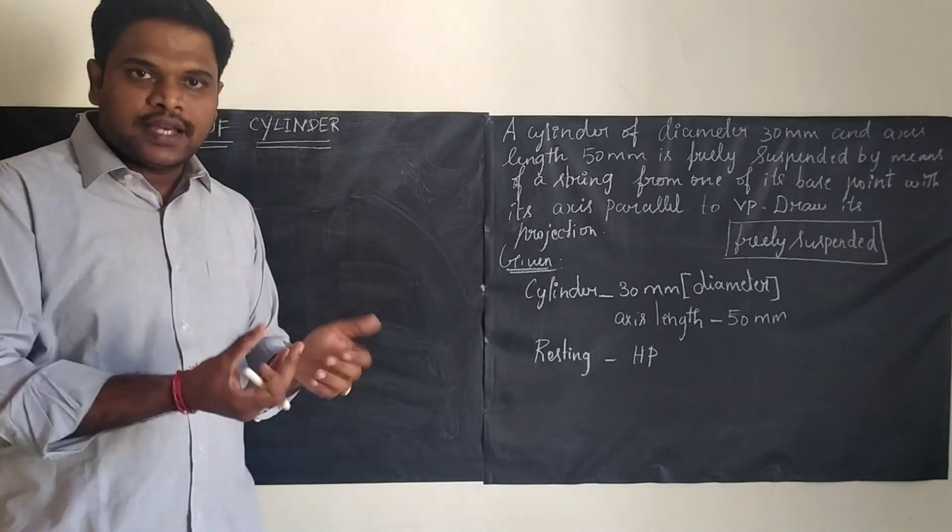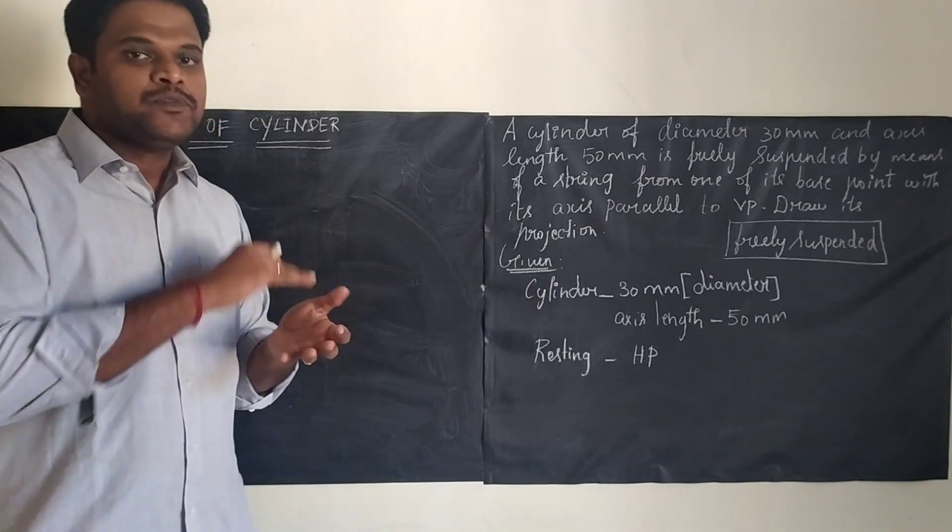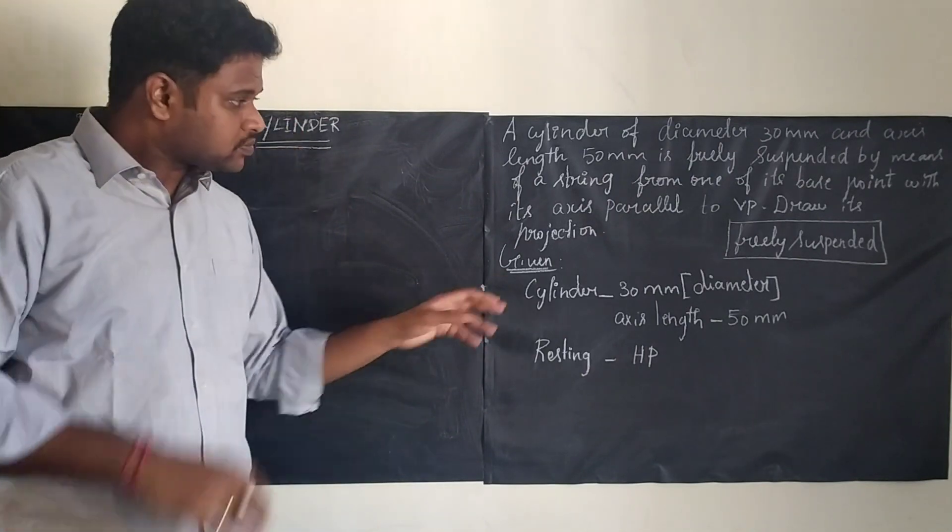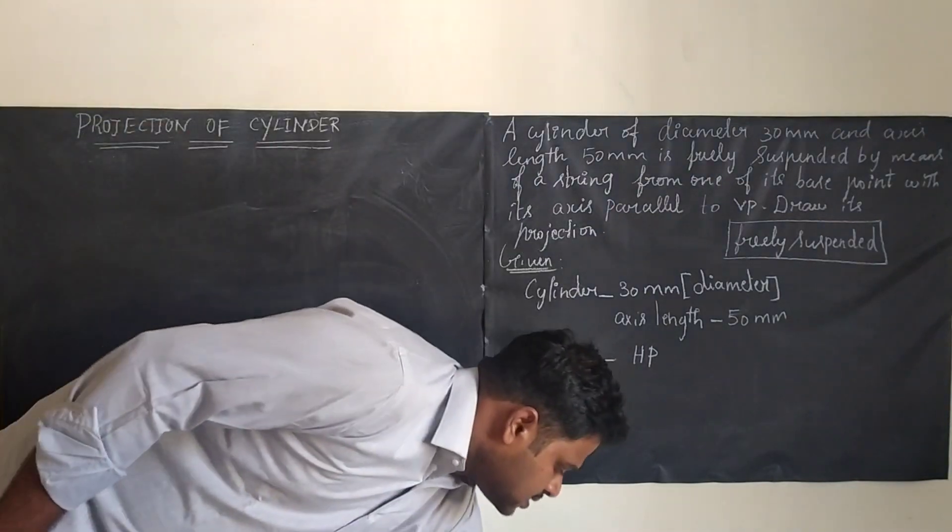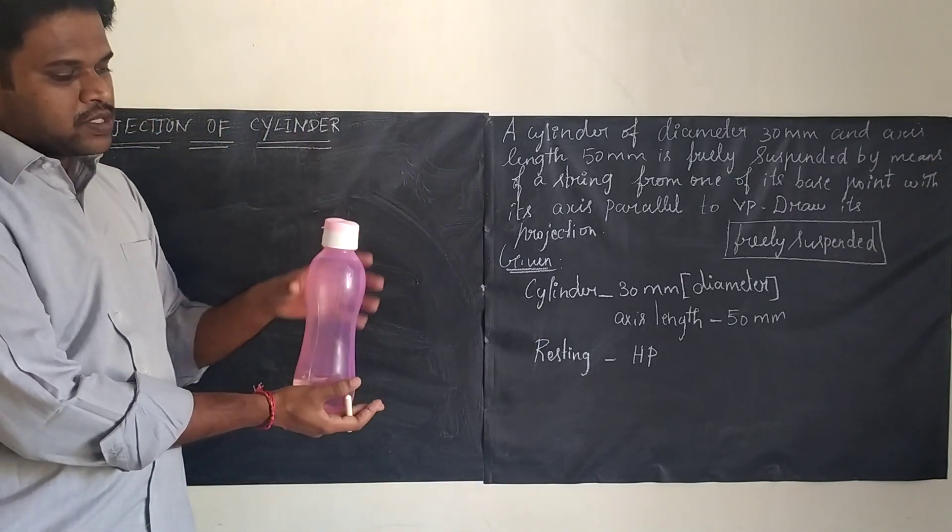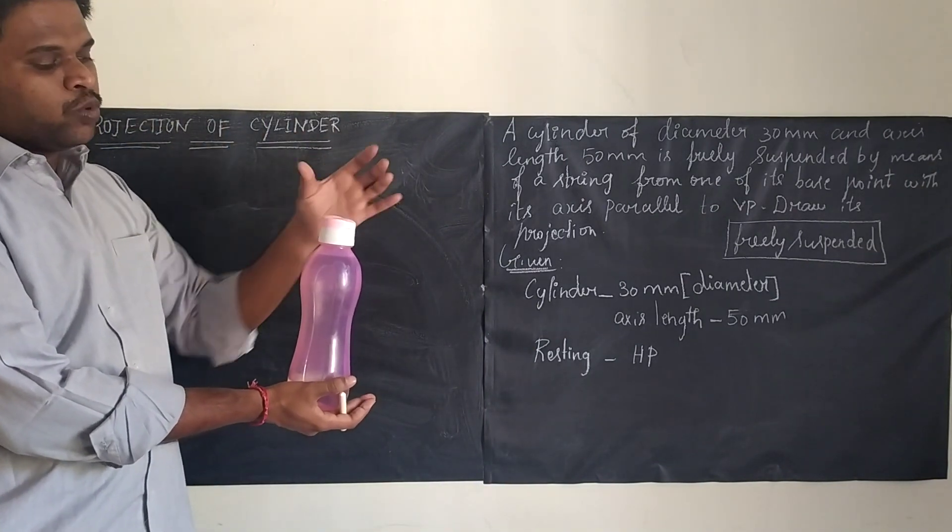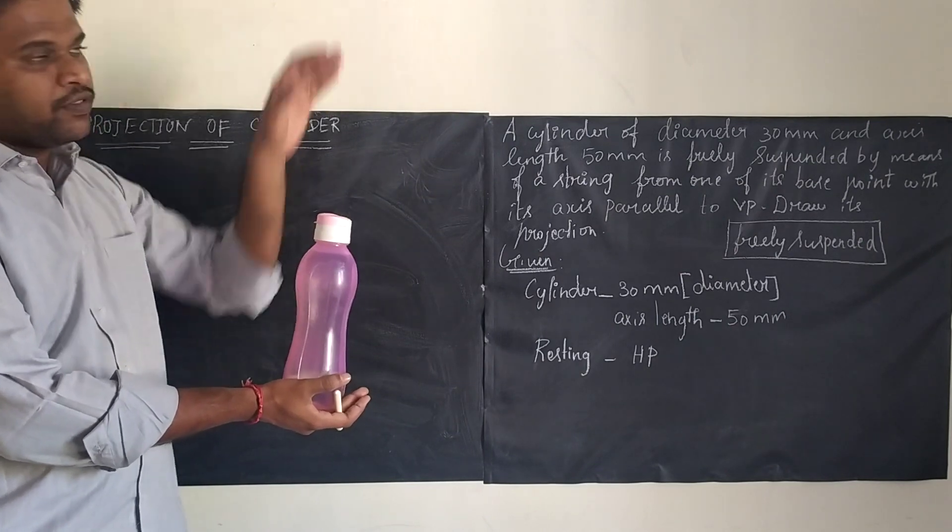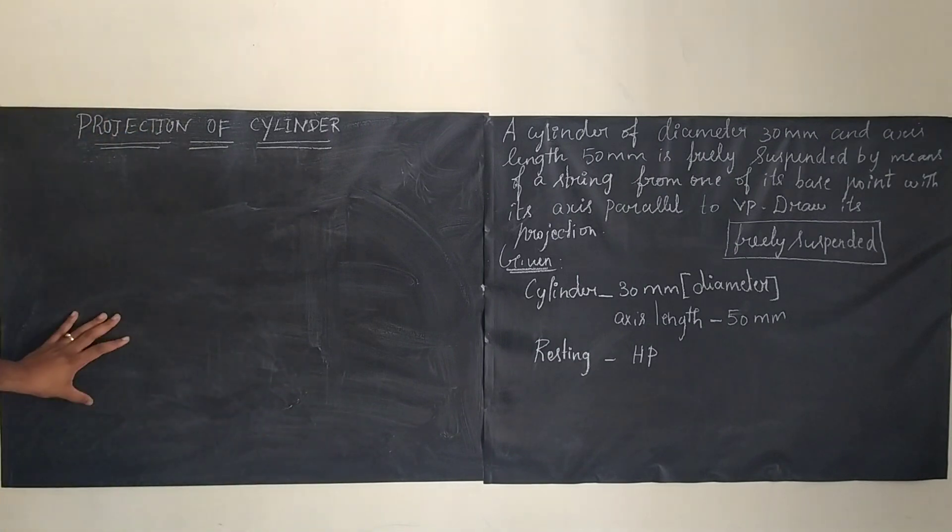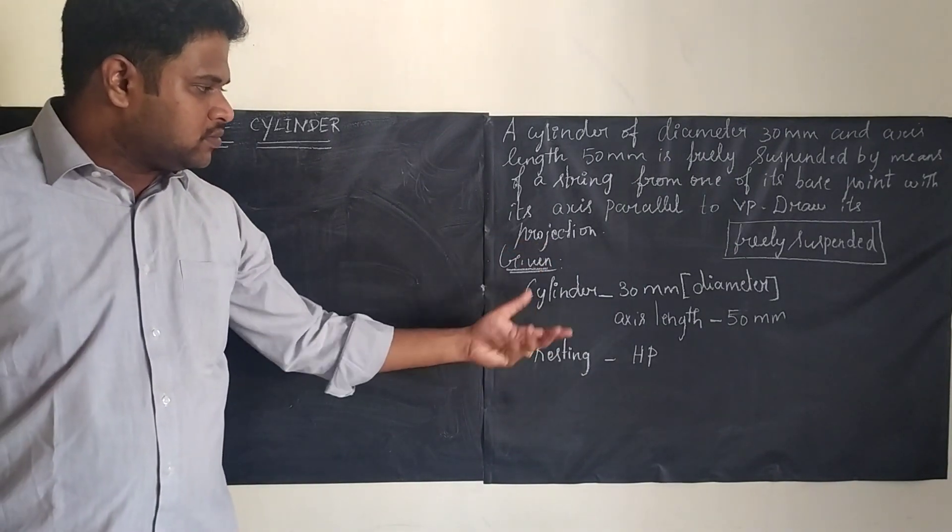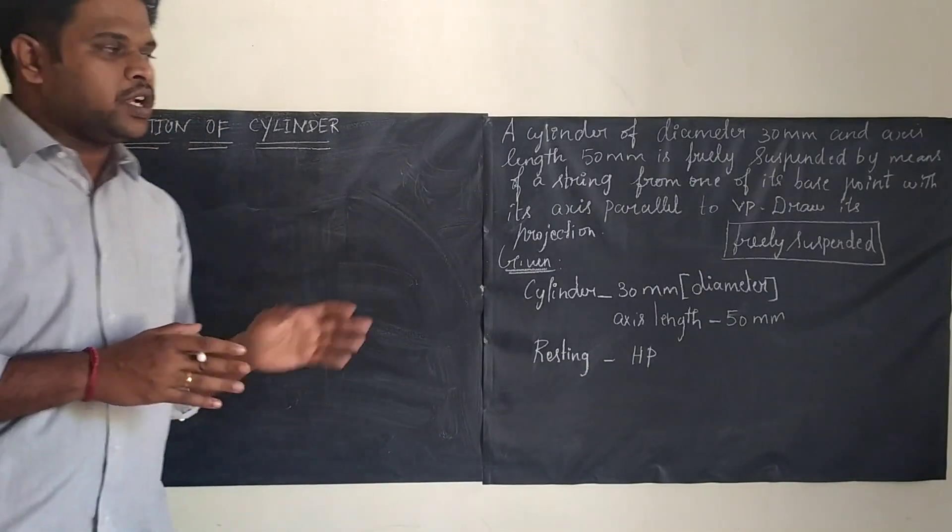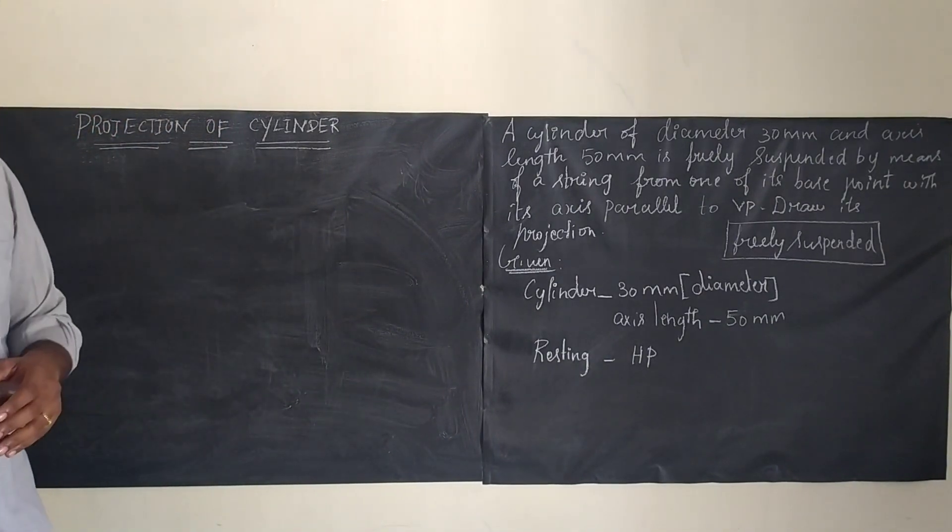So the base diagram we are going to draw will be in HP. The circle and cylinder is resting in HP. True shape of the diagram can be seen only from the top view. Just imagine this as a cylinder resting on HP. True shape of the cylinder, that is the circle, can only be seen from top view. So we are going to draw the circle in HP. We need to draw and show the projection. Now we will see how to draw the diagram step by step.